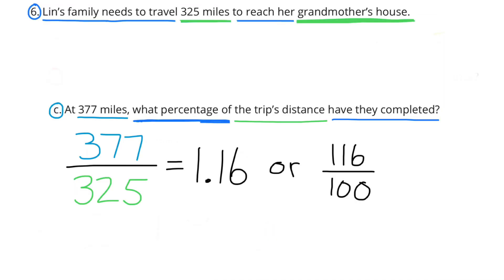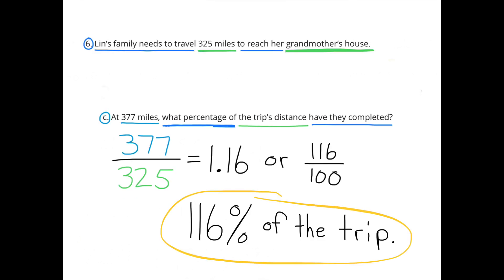Part C: At 377 miles, what percentage of the trip's distance have they completed? Well, I know that 377 is more than 325, so they've gone more than 100% of the trip. I can still figure this out by dividing the number of miles traveled by the number of miles they need to travel. 377 divided by 325 equals 1 and 16 hundredths, which is the same as 116% of the trip.